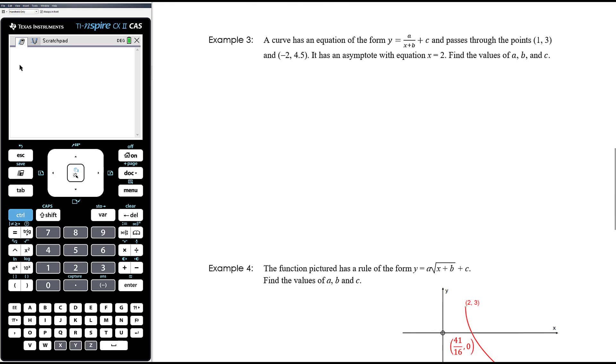Example 3 and 4 are sort of working backwards, so a curve has equation of the form y equals a over (x plus b) plus c and passes through the points (1, 3) and (-2, 4.5). It has an asymptote with equation x equals 2, find the values of a, b, and c. Okay, so it's a hyperbola. The asymptote with equation x equals 2 means the equation is y equals a over (x minus 2) plus c, so that means that b must be negative 2. And then we've got 2 points to find our 2 unknowns. So I'm going to sub in the point (1, 3). When x equals 1, y equals 3. So this is 3 equals 1 minus 2 is negative 1. a divided by negative 1 is just negative a plus c. Alright, we can leave that at that for now.